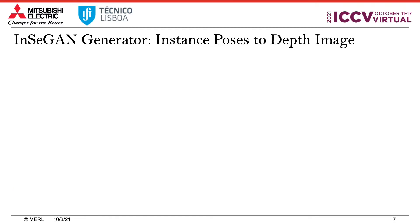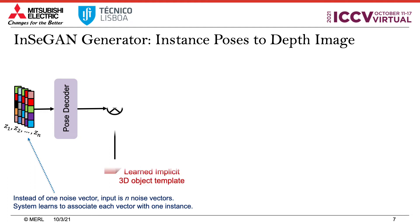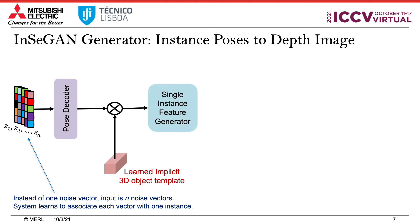Now let us describe our GAN architecture. Rather than taking a single random noise vector as input as in standard GAN approaches, INSEGAN takes N random noise vectors denoted Z, where N is the number of instances assumed in the depth images. The generator converts each Z_i into a pose vector for an object instance in the to-be-rendered depth image, using an implicit object template — a 3D latent tensor also learned along the way. The pose vector is applied to the template and projected to 2D to produce a feature map for a single object instance.